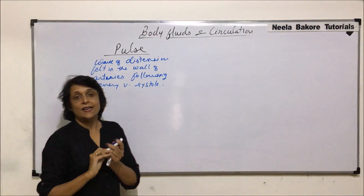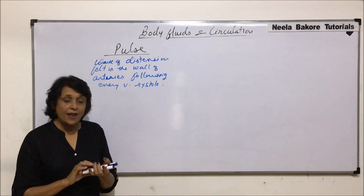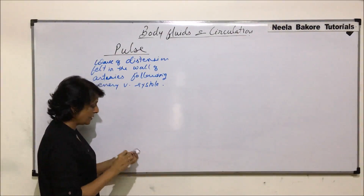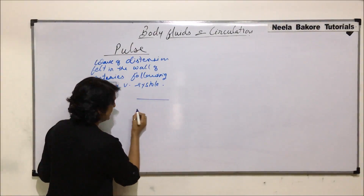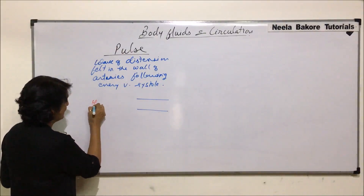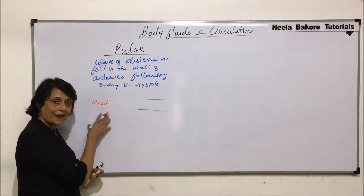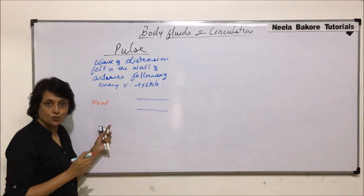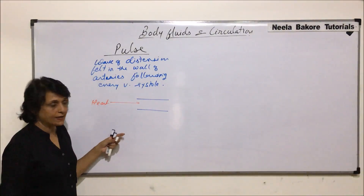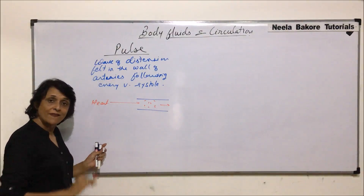So what exactly are we trying to say from this definition? It's a wave of distension. Let us take a simple example to understand. Suppose this is the blood vessel or artery which we are drawing here. This is an artery and it is receiving blood from the heart. Situation one: the heart contracts, meaning ventricular contraction or ventricular systole. The ventricle pumps blood into the arteries, and the blood flows with the force coming from the heart.